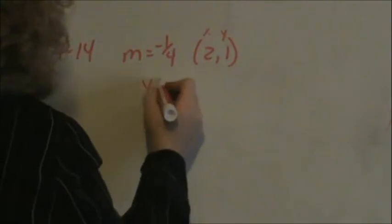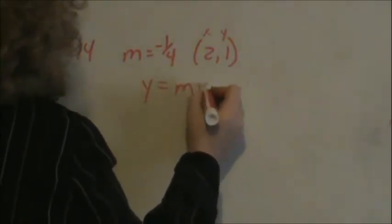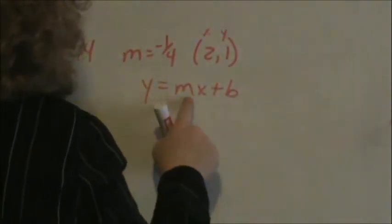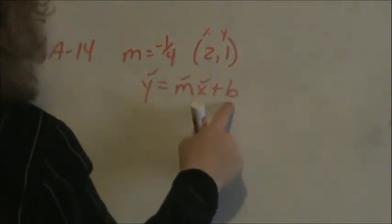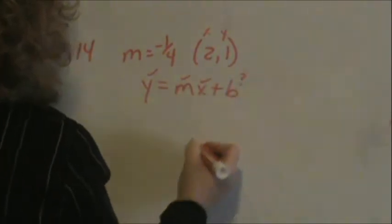We can take our slope and our point and put it into the general equation of a line. We know a y value. We have our slope. We know an x value. We don't know b, but we can calculate it.